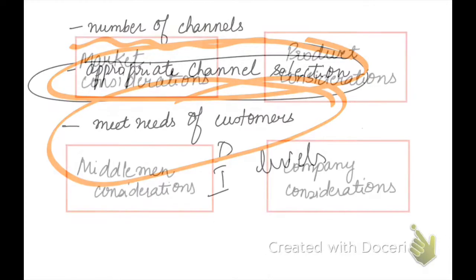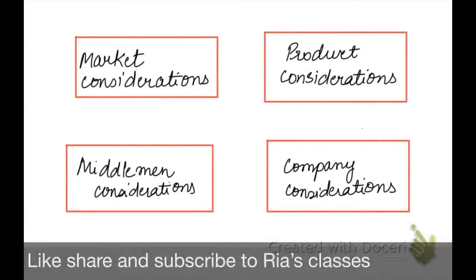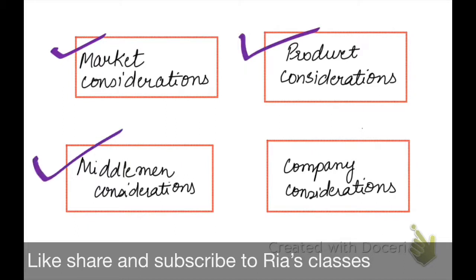If we talk about the factors which influence the channel of distribution, we can divide them into four categories: first is market consideration, second is product consideration, third is middleman consideration, and the fourth is company consideration. Let's look at each of these categories.